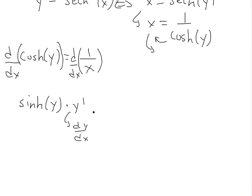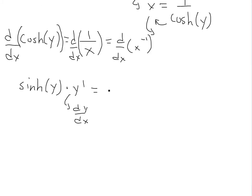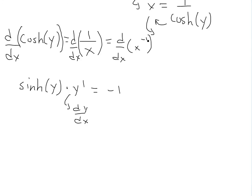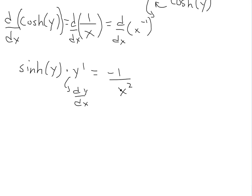On the right side, the derivative of 1/x: we rewrite it as x to the power of negative 1, then apply the power rule — bring down the negative 1 and subtract 1 from the exponent — giving negative x to the power of negative 2, or negative 1 over x squared.